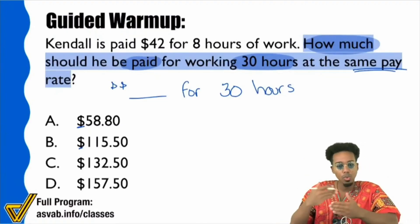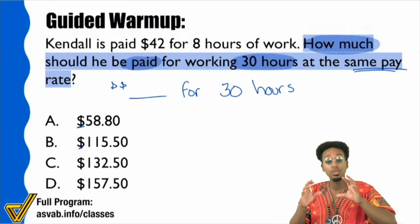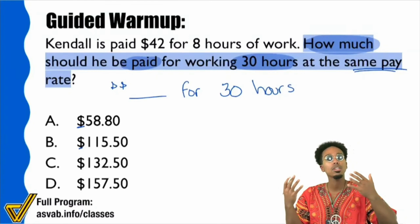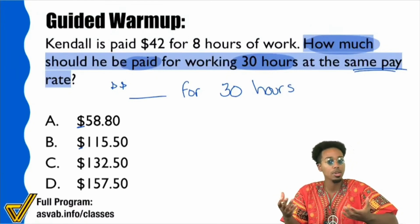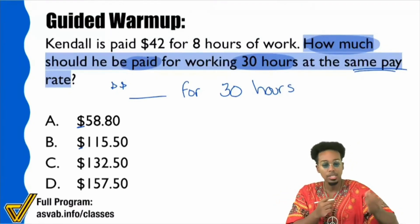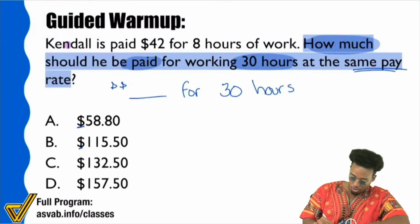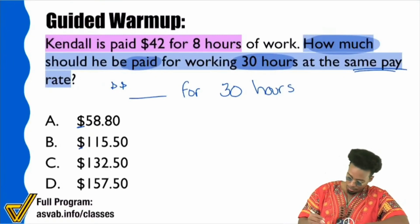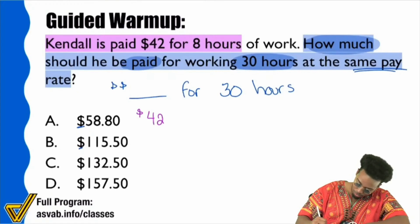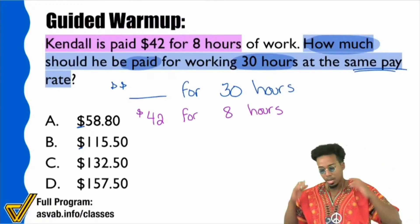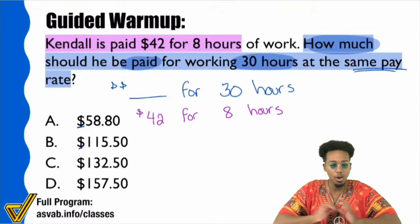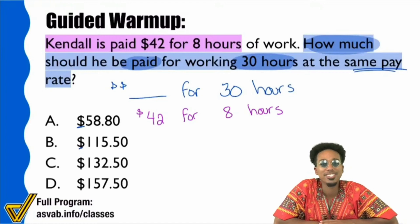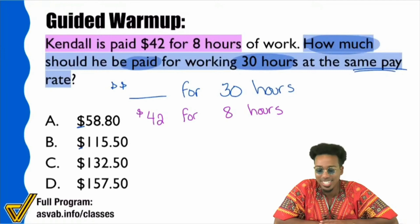Now let's start writing the information down, because in step two, this is where the cookie crumbles — where things actually start becoming fun when you've had the practice and training. Highlight this: Kendall is paid $42 for eight hours of work. So right there, we can write $42 for eight hours. For those of us who said this is a proportion, can you give me the main idea of proportions that reveals this is a proportion problem?